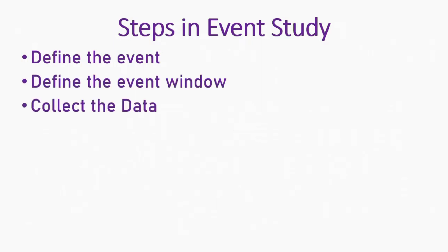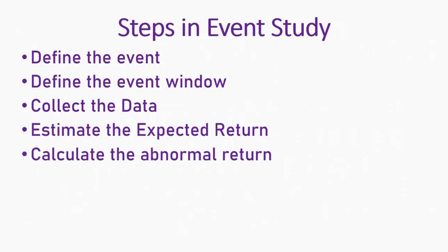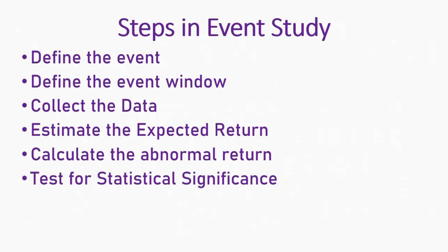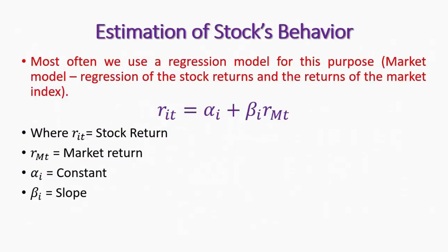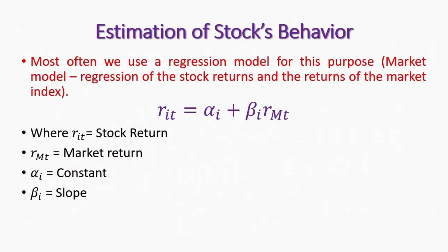We follow six simple steps: define the event, define the event window, collect the data, estimate the expected return (the average or expected return from the market), calculate the abnormal return (the deviation from the expected to the actual return), and test for statistical significance. If you follow these six steps, the event study is complete.